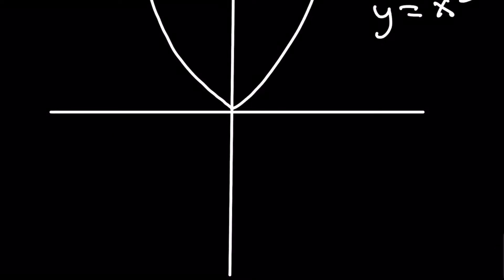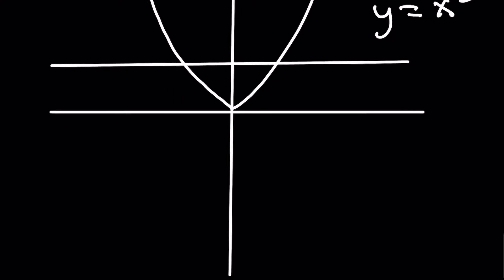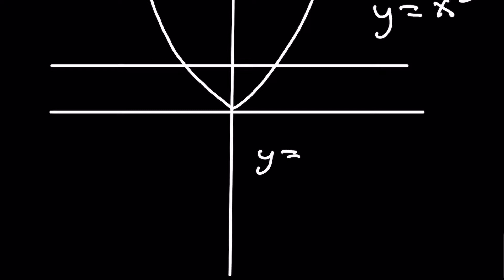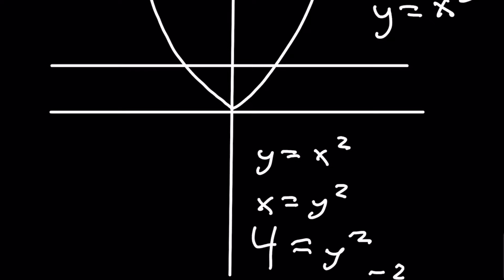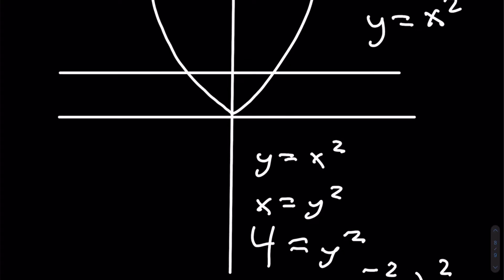Let's take one last example — y equals x squared — so you can get a better fundamental understanding of how this works. If we do the horizontal line test, we can obviously see that this doesn't pass it, so y equals x squared does not have an inverse function. Mathematically, if we try to find the inverse of y equals x squared, we switch x and y, giving us x equals y squared. But x equals y squared is not a function itself, because if we plug in 4, y can be both positive and negative 2. Since a function must have only one output for every input, and this has two, x equals y squared is not a function — meaning the inverse of y equals x squared does not exist.